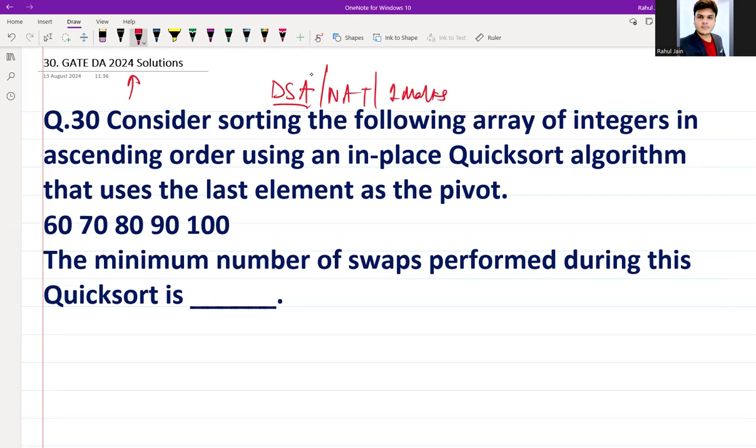Consider sorting the following array of integers in ascending order using an in-place quicksort algorithm that uses the last element as the pivot. So this is the sequence which is provided to us, and they are saying use the last element as the pivot. The minimum number of swaps performed during this quicksort is what?